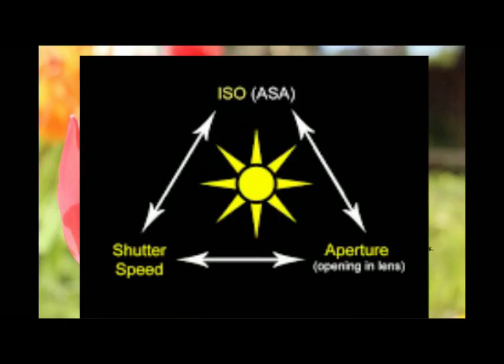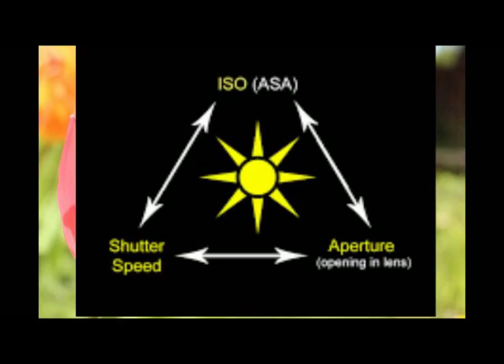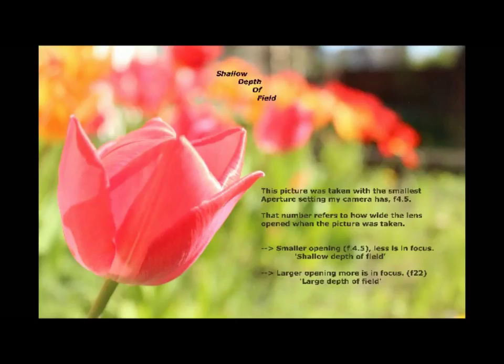In aperture priority mode, it only allows you to play around with the ISO and the aperture — doesn't it? That varies by camera. Mine just had the ISO and the aperture setting, so going into full manual mode would allow a little more flexibility, though maybe more challenging to get exactly what you want since you're playing with shutter speed and ISO. When you change one leg of the tripod, you have to adjust with the others.